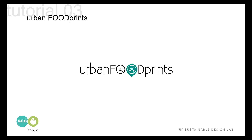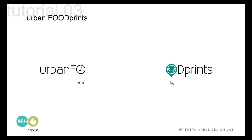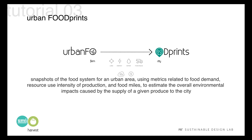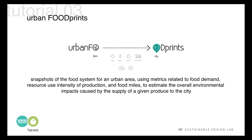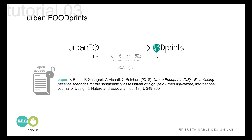To be able to assess the sustainability of urban food production, you first need to study the existing supply chain from farm to city, so that you have a baseline to compare your food production scenarios to. Based on this premise, we have developed the urban food print method, which consists of gathering data on the food system for a given urban area and estimating the environmental impacts of this baseline. You can read more about the method in our open access paper in the International Journal of Design and Nature and Ecodynamics.